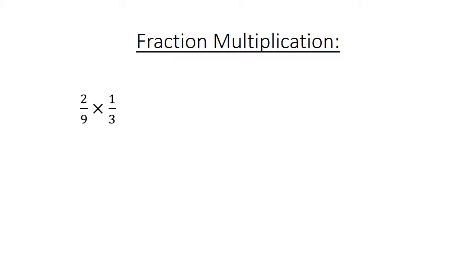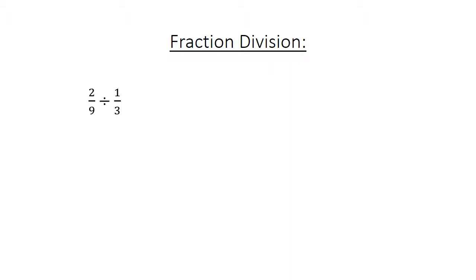Fraction multiplication. 2 over 9 times 1 over 3 equals 2 over 27. Fraction division. 2 over 9 divided by 1 over 3 equals 2 over 9 times 3 over 1 equals 6 over 9, and we simplify to 2 over 3.